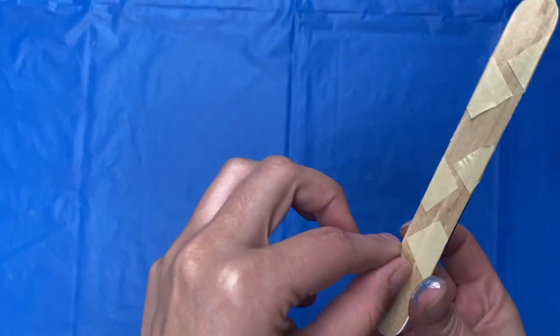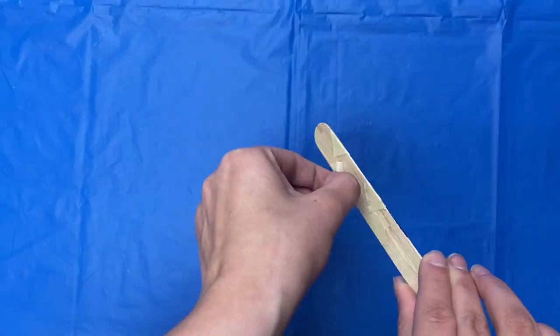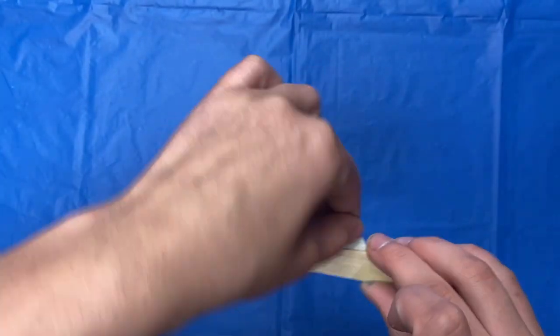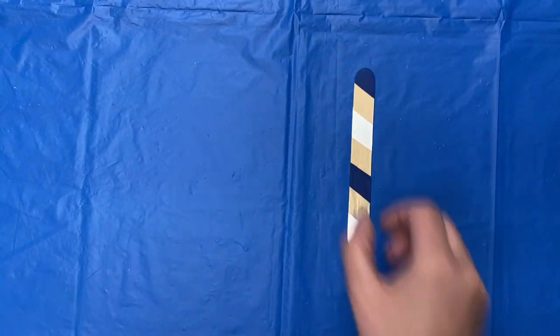Once it's dried, peel the tape off. Make sure you give it plenty of time to dry before you place it in your book.